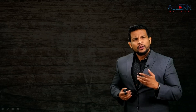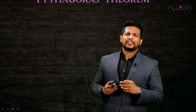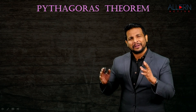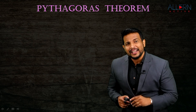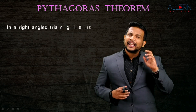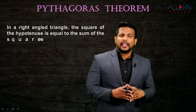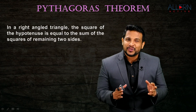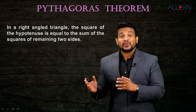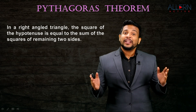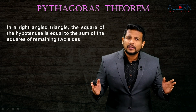Every theorem has a statement, and likewise this theorem also has a statement. The statement of Pythagoras theorem says that in a right angle triangle, the square of the hypotenuse is equal to the sum of the squares of the remaining two sides.